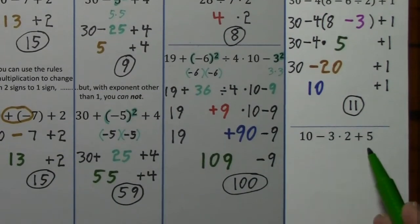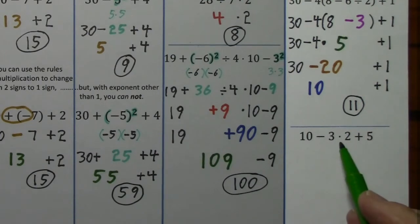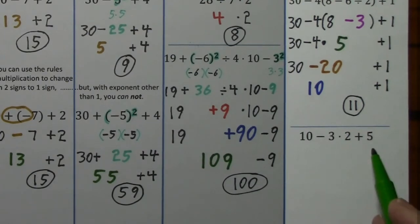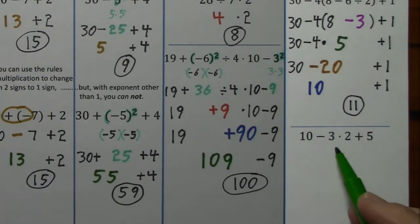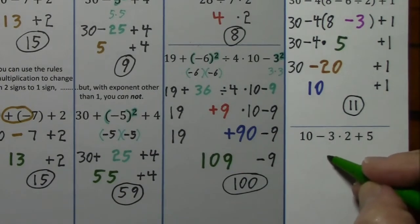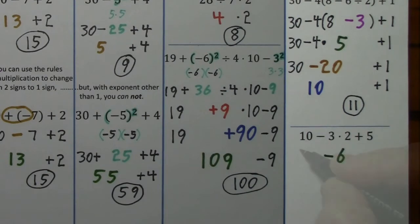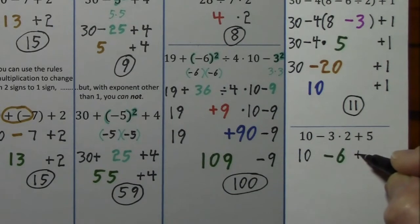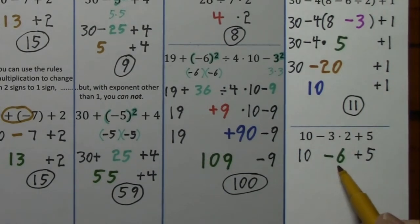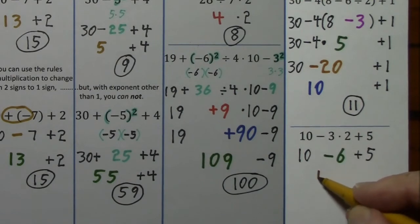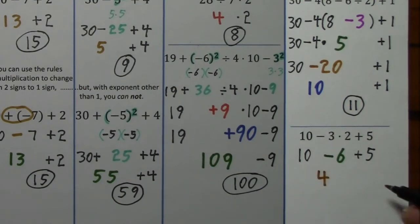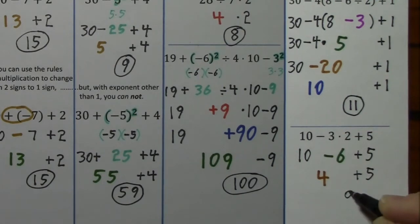Looking at the last one, you have to take care of multiplication prior to addition or subtraction. Negative 3 times positive 2 — bring down what you haven't touched, and bring down the positive 5. Here the signs are different — we subtract, keep the sign of the larger. Bring this down, and finally we get the answer.